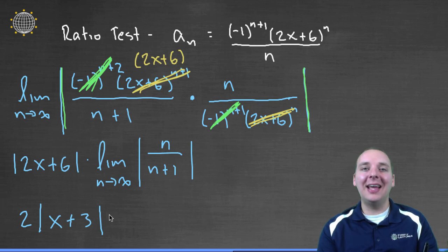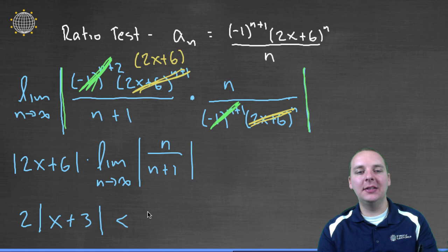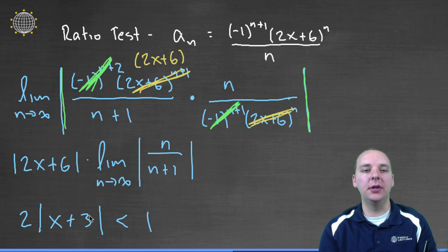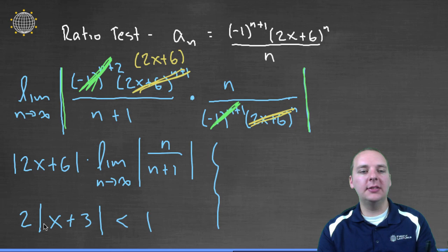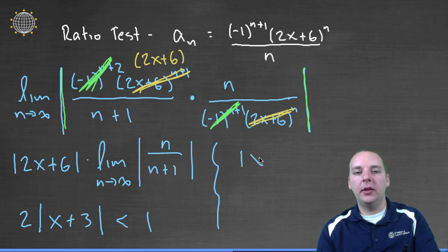Now what we would really like to have happen is for this quantity to be less than 1, because that would make the ratio test, or by the ratio test, it would make our series converge. Well this is only less than 1 for certain x values. We have to carefully pick x to make this quantity less than 1. So to make this more clear, let's divide both sides by 2. So we'd have absolute value of x plus 3 would be less than 1 half.